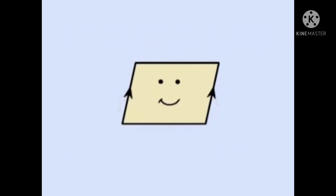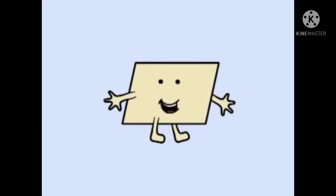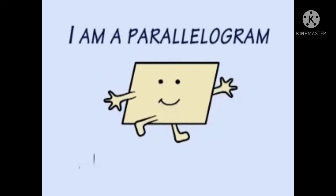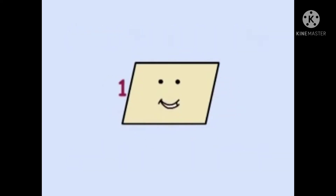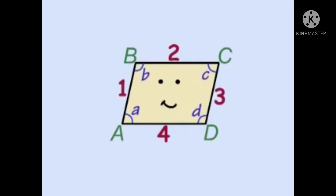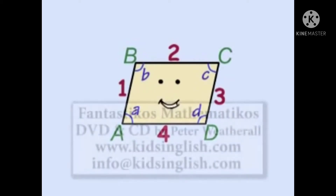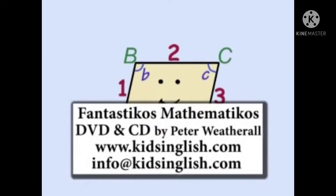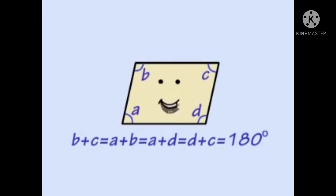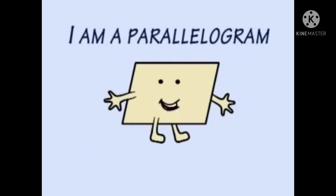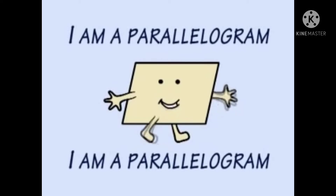I am a parallelogram. Opposite sides are parallel, and that is how you can tell. I am a parallelogram. I am a parallelogram. My four sides are straight, but the angles at the corners they make aren't always 90 degrees. Measure them and you'll see — adjacent angles add up to be 180 degrees. I am a parallelogram.